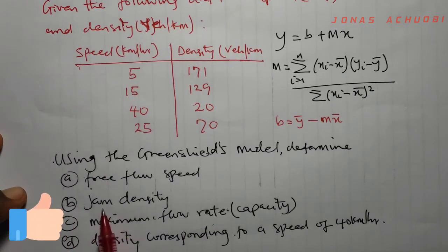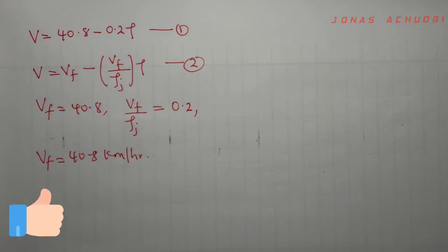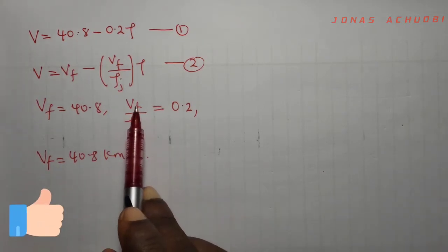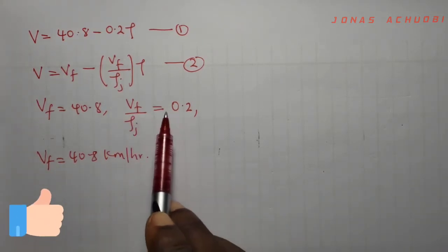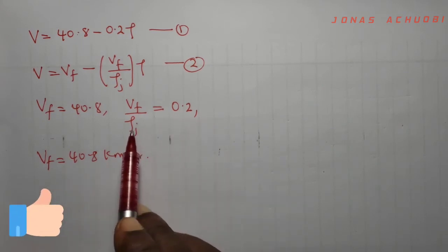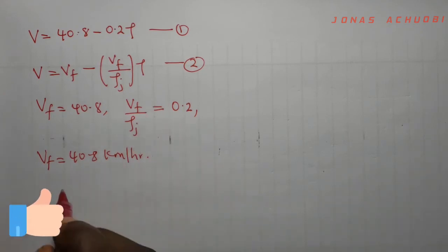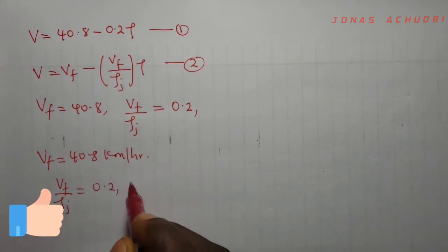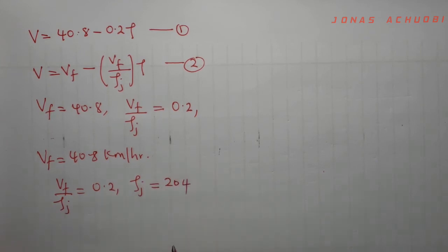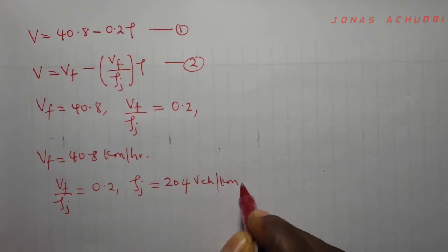B says we should determine the jam density. We have that the free flow speed over the jam density is equal to 0.2. So we can make the jam density the subject of the equation. So jam density now becomes 204 vehicles per kilometer.